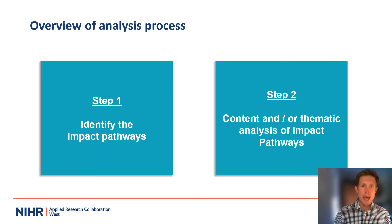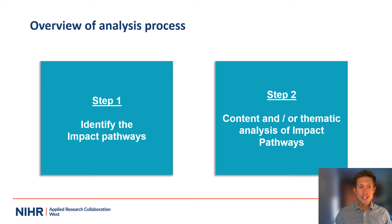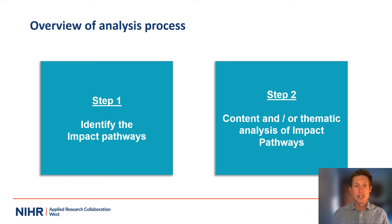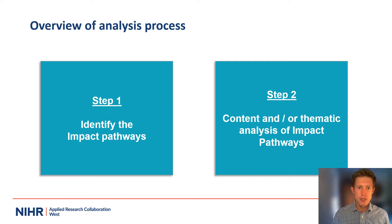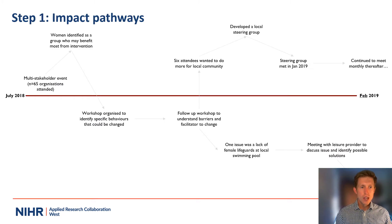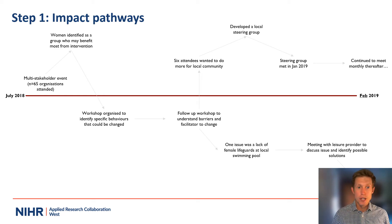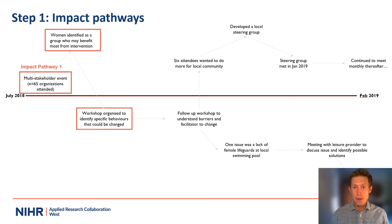There are two main steps to the analysis of the ripple effect mapping outputs. The first is the identification of what we refer to as impact pathways, and the second is a content and/or thematic analysis of the content within these impact pathways, and we're going to go through all of this in the next 10 minutes or so. The first part is about the identification of impact pathways, and we're drawing on a previous example.